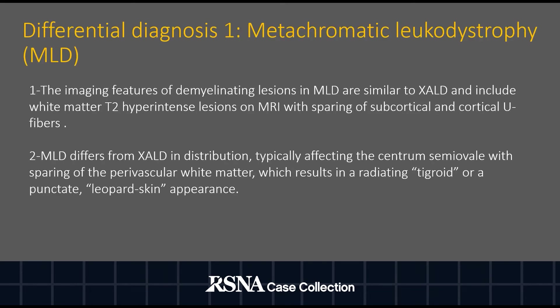The top differential diagnosis includes metachromatic leukodystrophy. The imaging features of demyelinating lesions in MLD are similar to XALD and include white matter T2 hyperintense lesions on MRI with sparing of subcortical and cortical U-fibers. However, MLD differs from XALD in distribution, typically affecting the centrum semiovale with sparing of the perivascular white matter, which results in a radiating tigroid or punctate leopard-skin appearance.